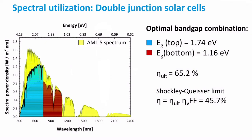Let's look at the spectral utilization of a double junction solar cell. This double junction solar cell is composed of a top and bottom cell — the top cell with a wide bandgap absorber and the bottom cell with a low bandgap absorber. The blue area represents the fraction of energy that can be used by the top cell. The bandgap of the top absorber here is 1.7 eV, which corresponds to a wavelength of around 700 nm. The portion of energy that can be used by the bottom cell is marked in brown. The bottom cell absorber has a bandgap of about 1.2 eV, corresponding to a wavelength of around 1,100 nm.